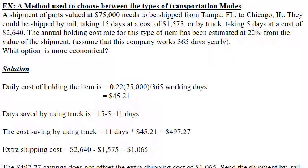Additional data: the annual holding cost rate is 22% of the shipment's value. The company works 365 days yearly. The question is which option is more economical — rail or truck — to transport this shipment while minimizing cost.